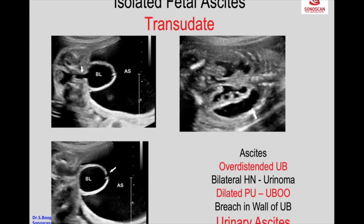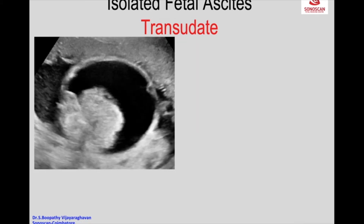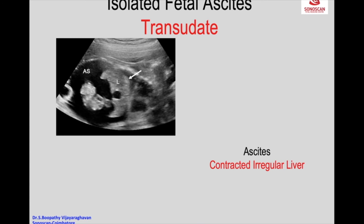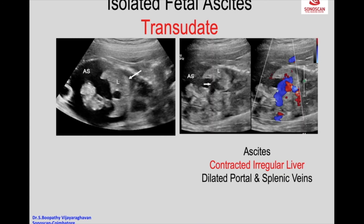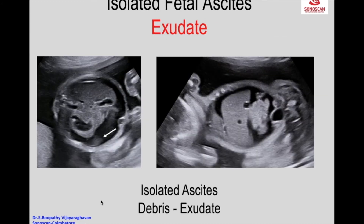Urinary ascites is a cause of transudative ascites as an isolated finding. With an irregular contour, in the hilum you see dilated portal and splenic veins both in gray scale and color, and the flow is away from the liver — pointers for an exudative ascites. When the ascites is isolated and it is an exudate, the first thing we must suspect is meconium peritonitis.